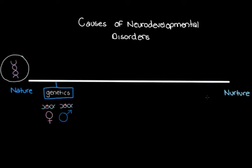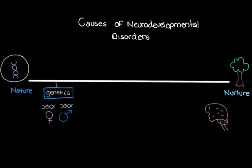On the other end of our spectrum, when we say nurture, we're talking about our environment — all of our personal experiences that happen after we're born. For example, I recently had an infection called meningitis, which is when our meninges, the protective membranes that cover our brain and spinal cord, become infected. I developed this infection from my environment rather than something I was born with. Let's put infections, including meningitis, on the nurture end of our spectrum as a possible cause of a neurodevelopmental disorder.